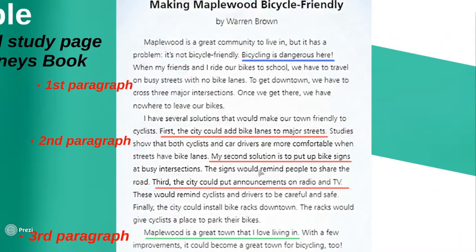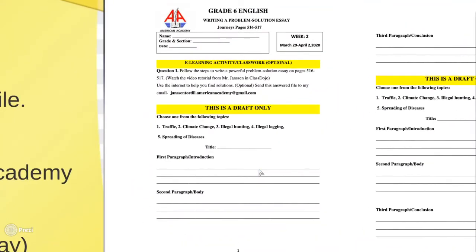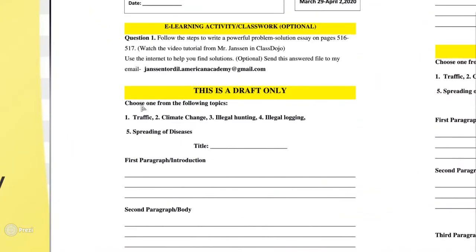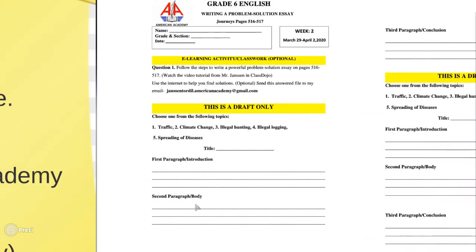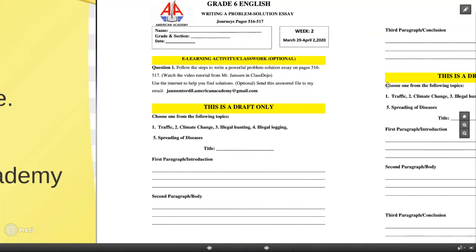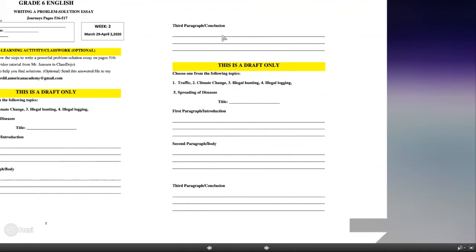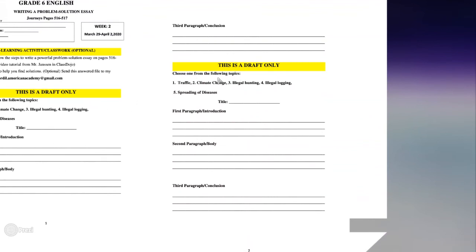Now let's go over your activity for today, which is required to be done at home. Download it from Class Dojo — this is a draft, and I'll give more writing activities next Wednesday. Choose one from the following topics: traffic, climate change, illegal hunting, illegal logging — which means illegal cutting down of trees — or the spreading of diseases like COVID-19. Write your title, describe your problem in the first paragraph, give your solutions in the second paragraph, and write your conclusion in the third paragraph. Then select a different topic and do it again.